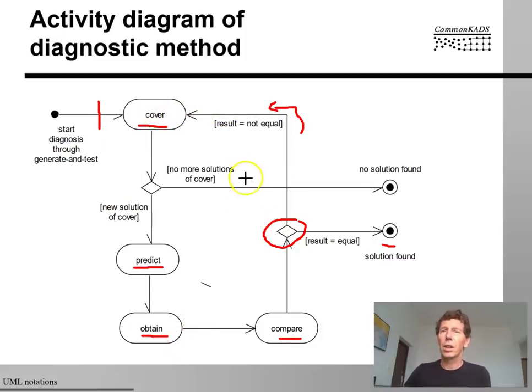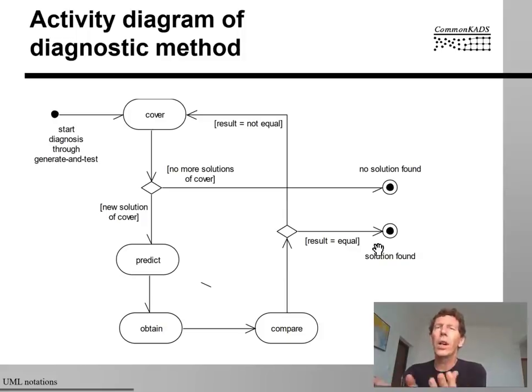So, a doctor goes through this loop of predicting a particular underlying disease, then obtaining symptoms to confirm or deny that hypothesis, then comparing the obtained results with the predicted results and if the prediction is correct, we're done, and if not, then we have to continue. So, you could also call this the Dr. House diagram, right? So, in the famous television series, Dr. House, this is exactly what House and his team is always doing.